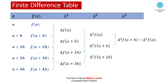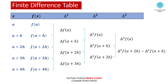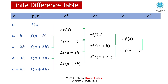Taking the third difference: delta³f(a) = delta²f(a+h) minus delta²f(a), and delta³f(a+h) = delta²f(a+2h) minus delta²f(a+h). Taking the fourth difference: delta⁴f(a) = delta³f(a+h) minus delta³f(a). We write all these values in the finite difference table.